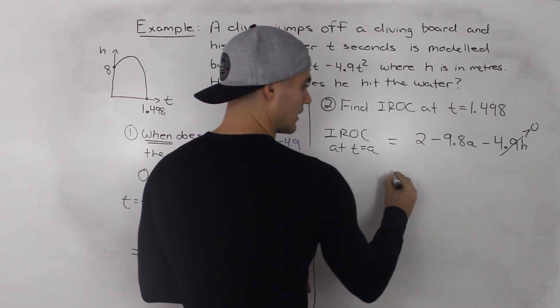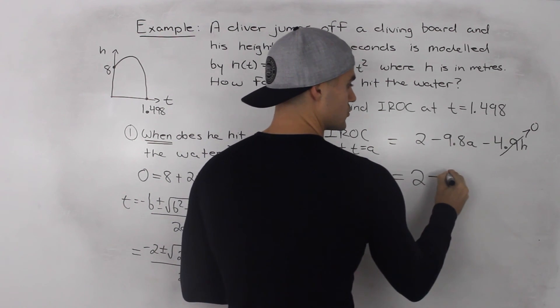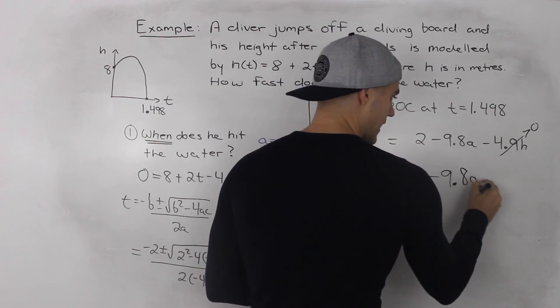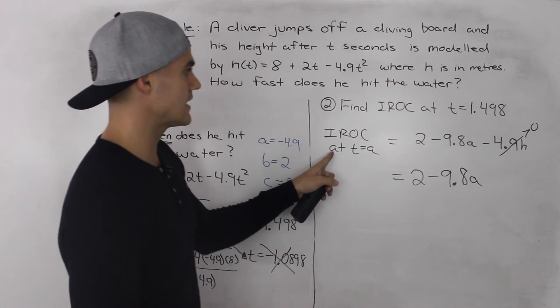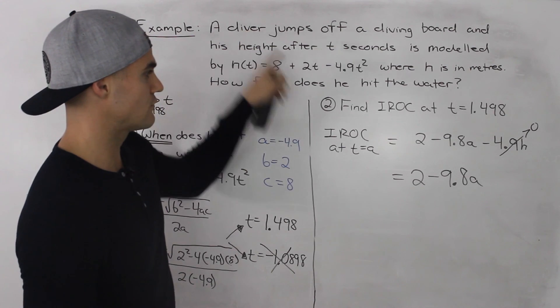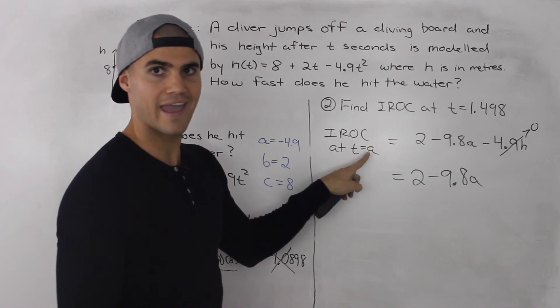So we're left with a general expression of 2 - 9.8a for the instantaneous rate of change of this diver at a time of a.